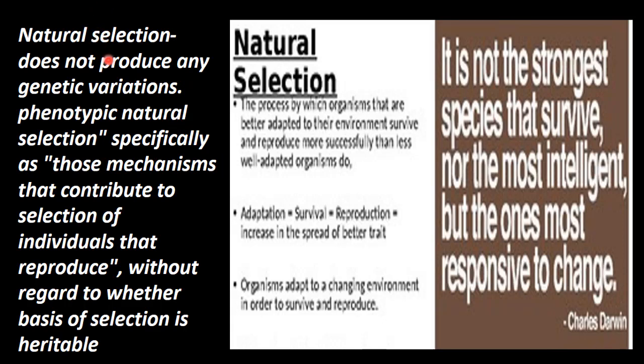Natural selection does not produce any genetic variation. Genetic variation is immediate. This is the phenotypical variety of species — phenotypic natural selection. The phenotypical character in the environment is the selection. Specifically, those mechanisms that contribute to the selection of the individuals that reproduce — that's what 'nature selects' means.